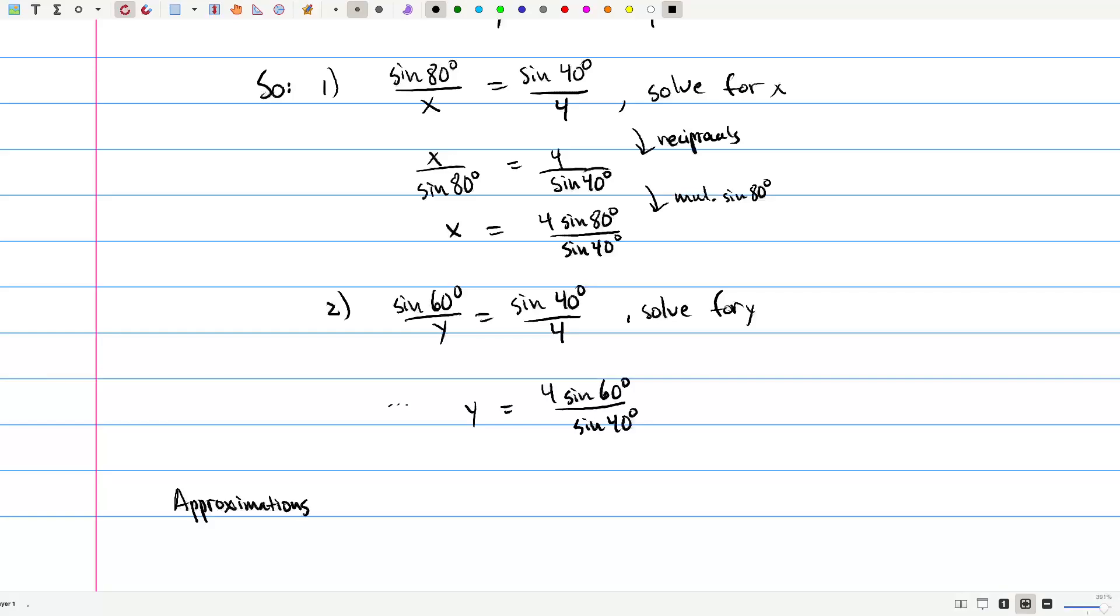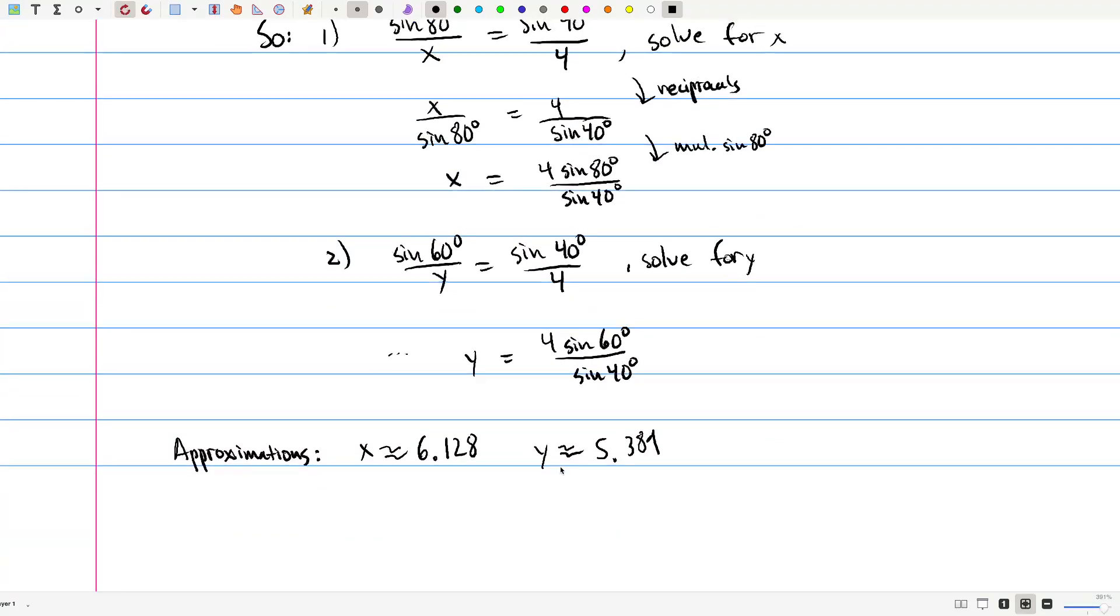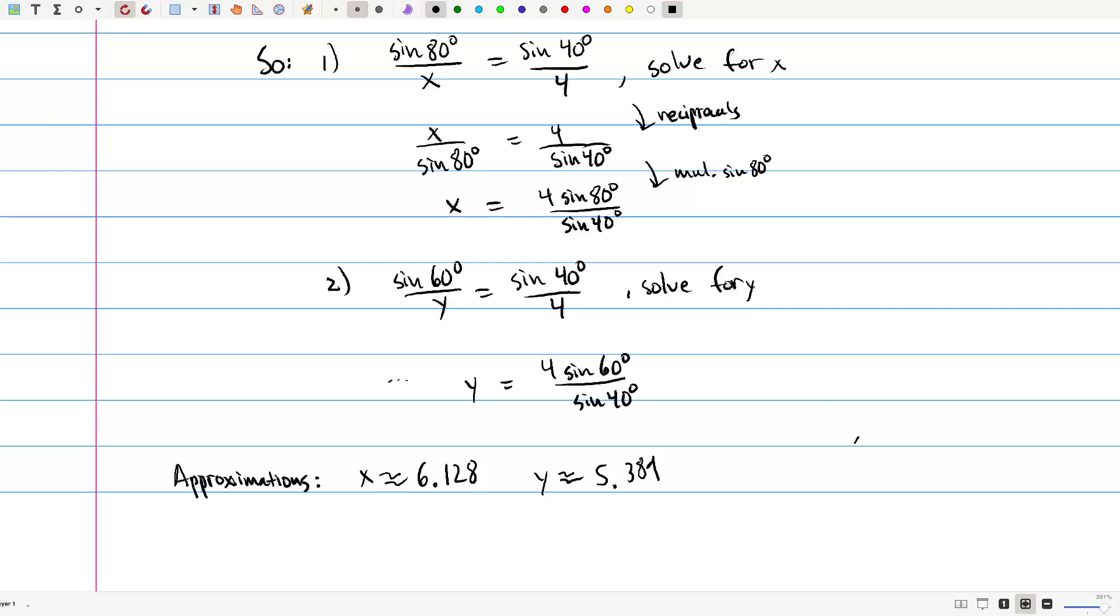Let's just approximate, make sure it makes sense. So x, if we were to plug this into a calculator, 4 times the sine of... I need to make sure to be in degree mode. So 4 times sine of 80 over sine of 40 gives 6.128. And y is approximately, it's going to be similar, but instead of 80, we've got 60, so 5.389. So just to look at this, 60, 40, and 80 are all angles that are acute. They're less than 90 degrees. So we'd expect the three side lengths to be sort of similar to each other, and that's what we get. But I'm going to write this on a triangle here.